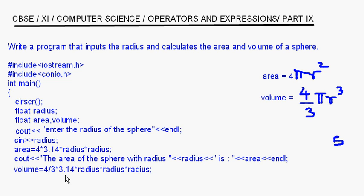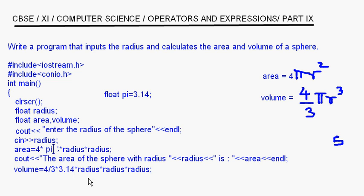If you want, you can put 3.14 into a variable — float pi equal to 3.14. Instead of writing 3.14, you can write pi. So the volume expression becomes: 4 / 3 into pi into radius into radius into radius. This is 4/3 πr³.